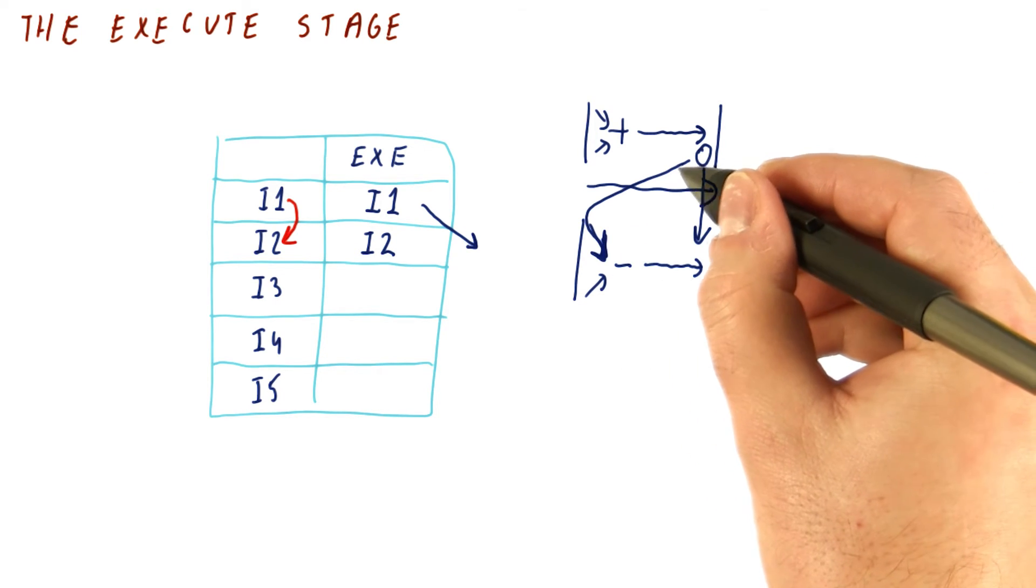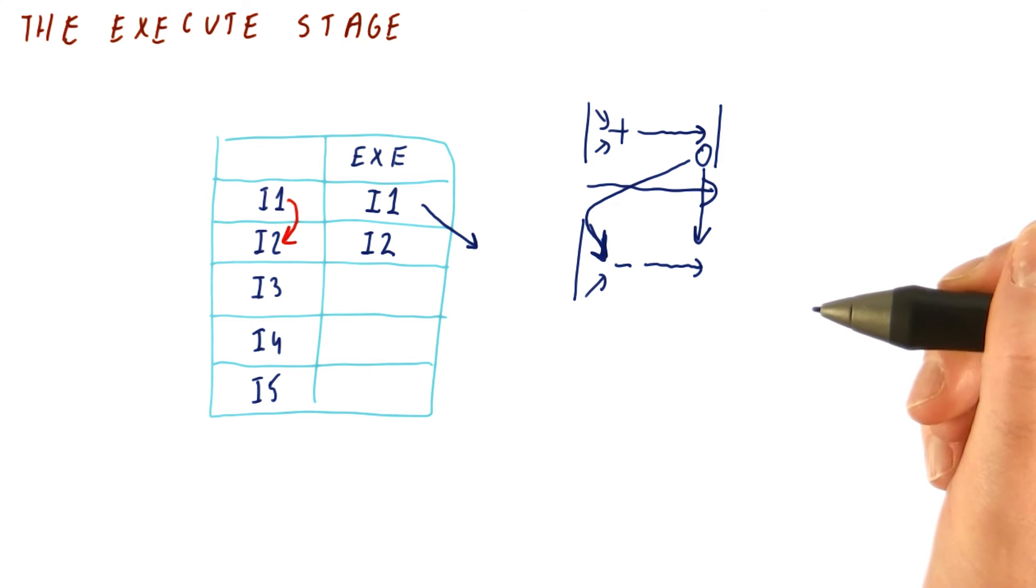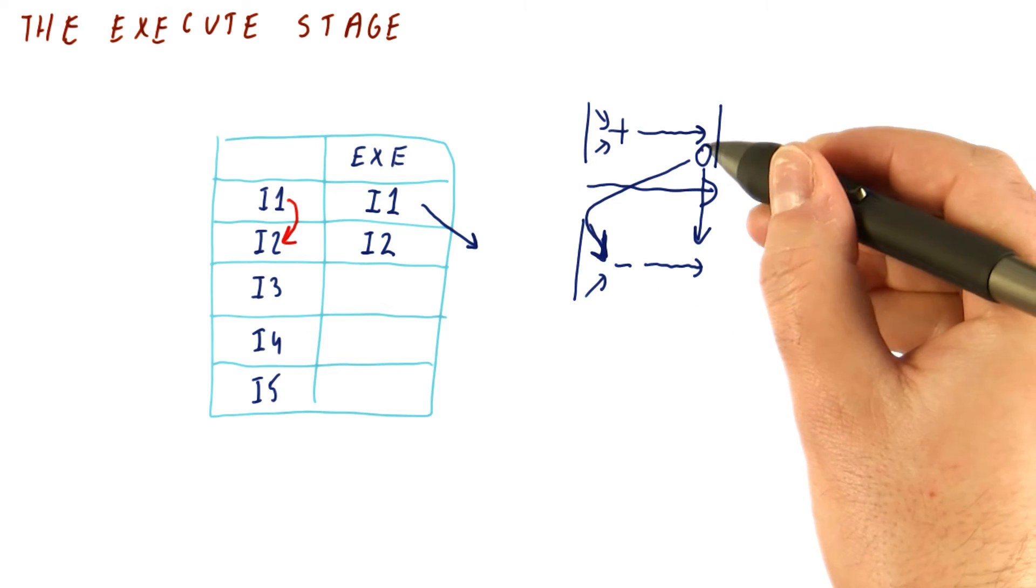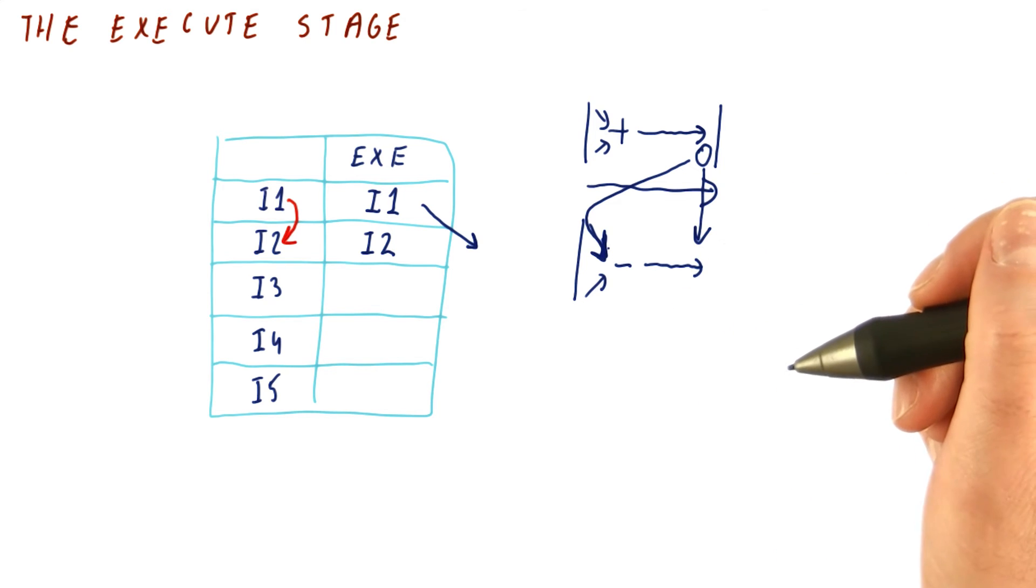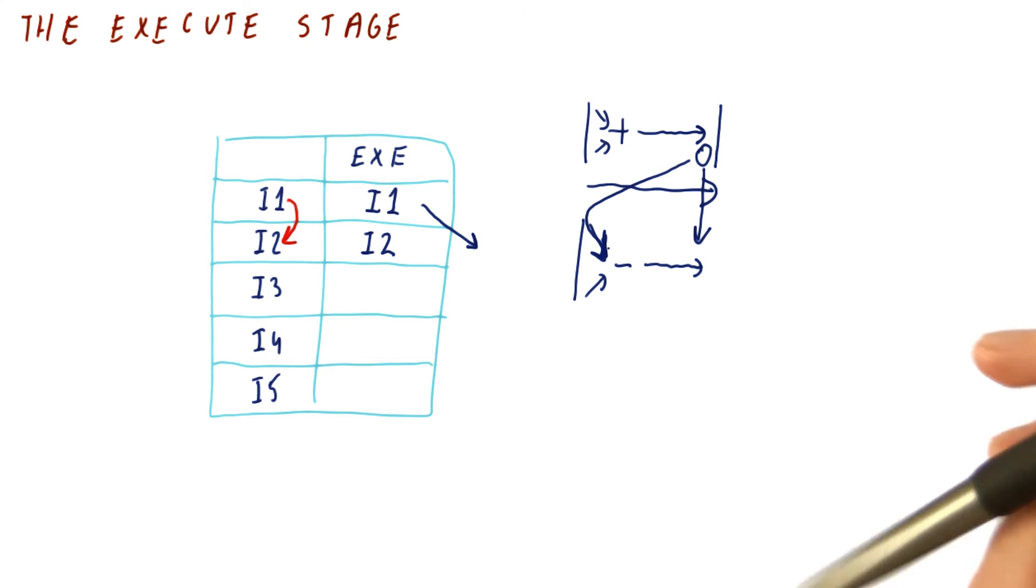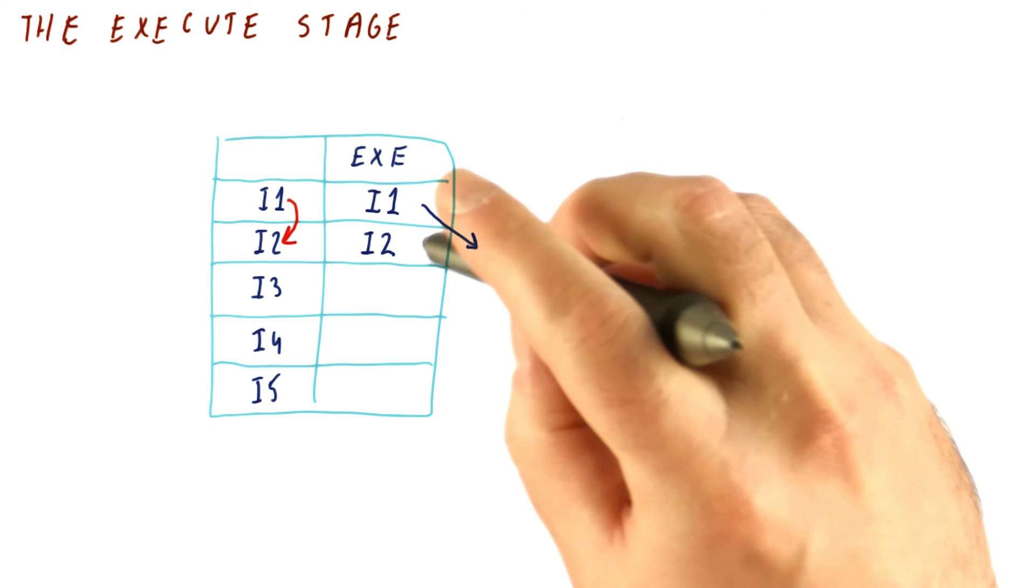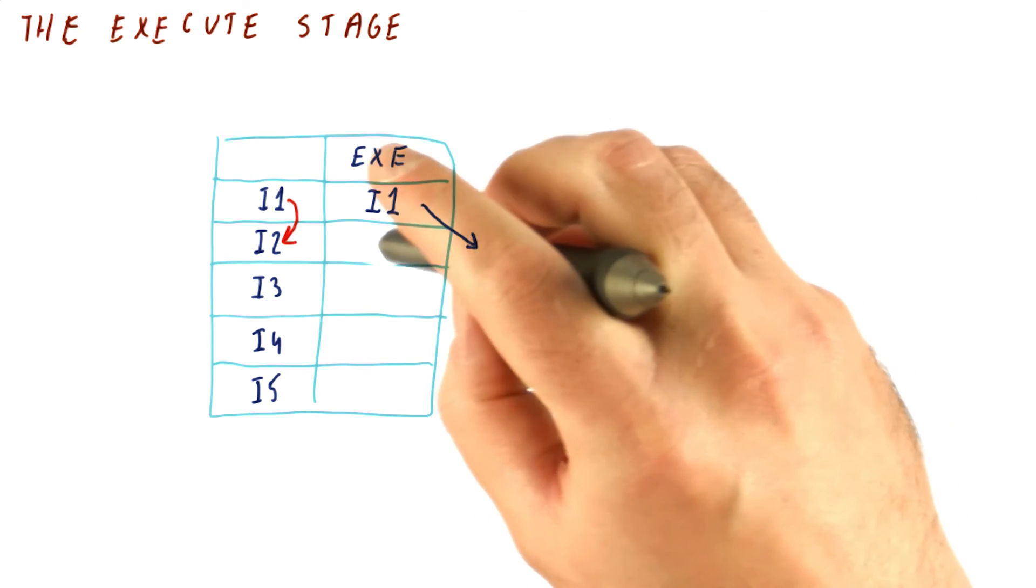Any arrow that goes backward here means basically time travel. It would produce a result in one cycle, send it back in time one nanosecond earlier so that it can be used here, which is of course impossible. So we cannot do that. What we will do is not execute this instruction here.